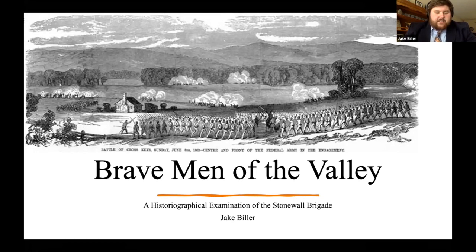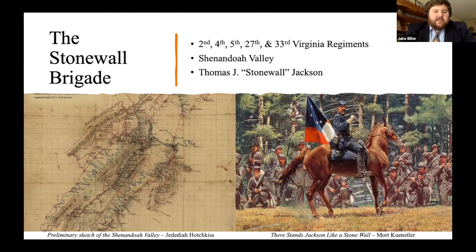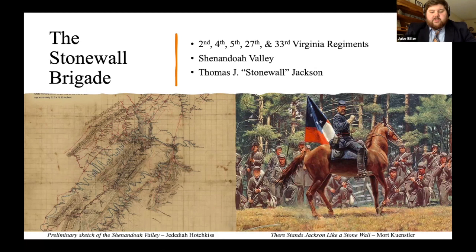The Stonewall Brigade stands out in our collective memory as one of the most famous fighting units of the Civil War. But why has it earned such a legendary status, and how has that memory changed over time? I chose to focus my research on how the brigade has been remembered by historians over time, tracking the historiography from the immediate post-war period through to more contemporary historians. I narrowed my research further by focusing on Jackson's Valley campaign of 1862. This was appropriate because for the Stonewall Brigade, the Valley campaign was a very personal conflict — this, after all, was their home.